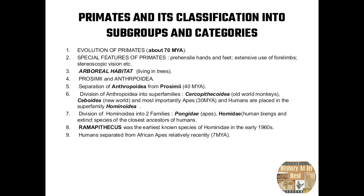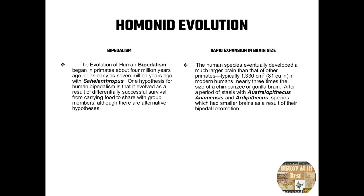Hominid evolution spanned a very long period. There were two major concepts: first, bipedalism; second, rapid expansion in brain size. Bipedalism began in primates about four million years ago, or as early as seven million years ago with Sahelanthropus. One hypothesis for human bipedalism is that it evolved as a result of differentially successful survival for carrying food to share with group members, though there were alternative hypotheses.